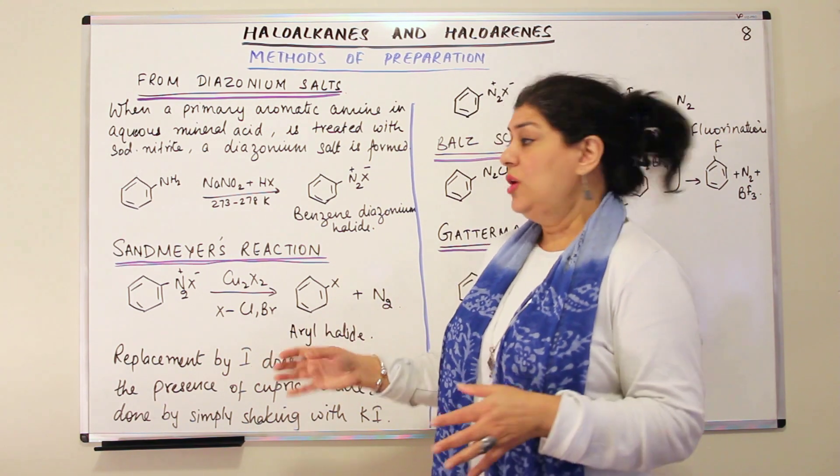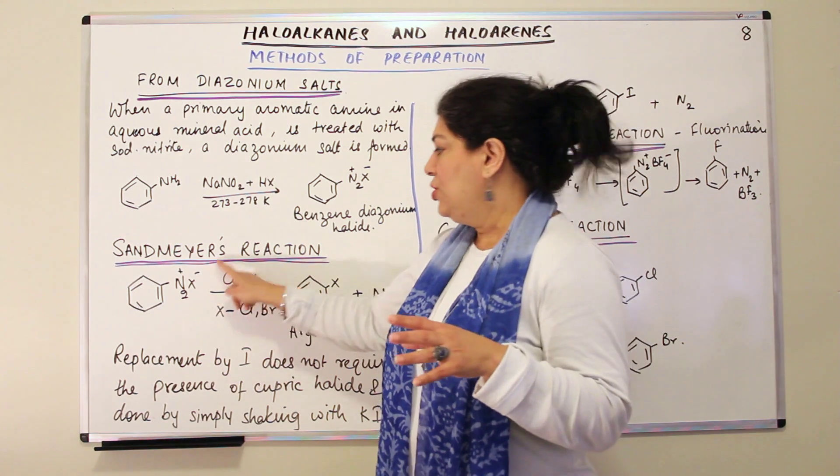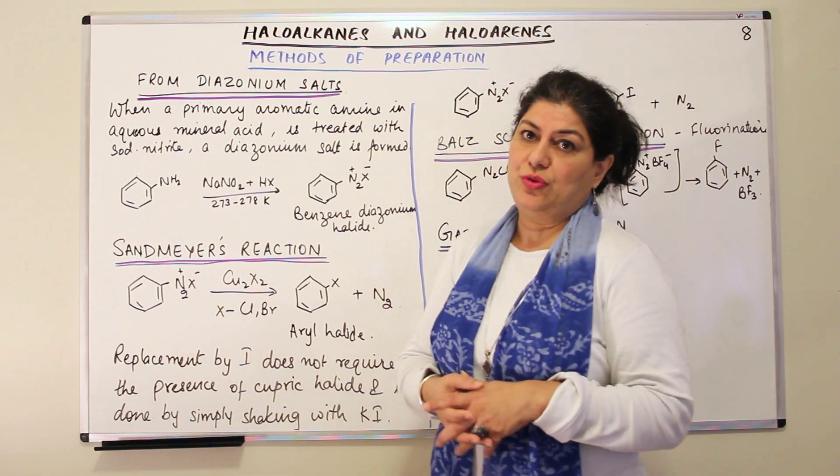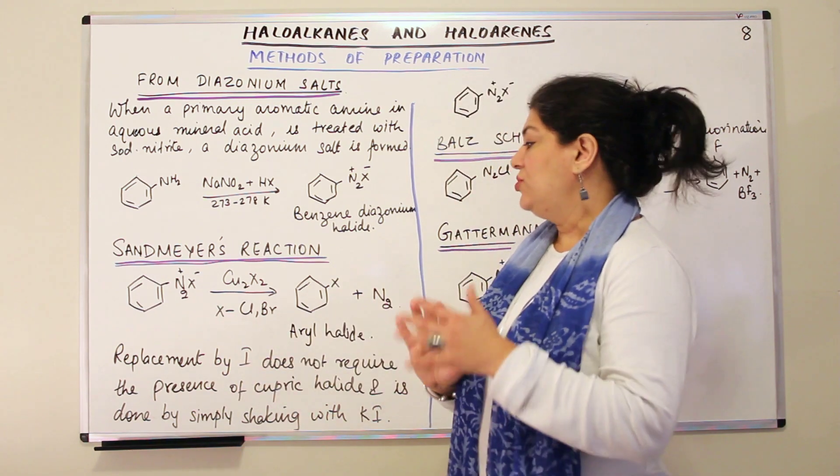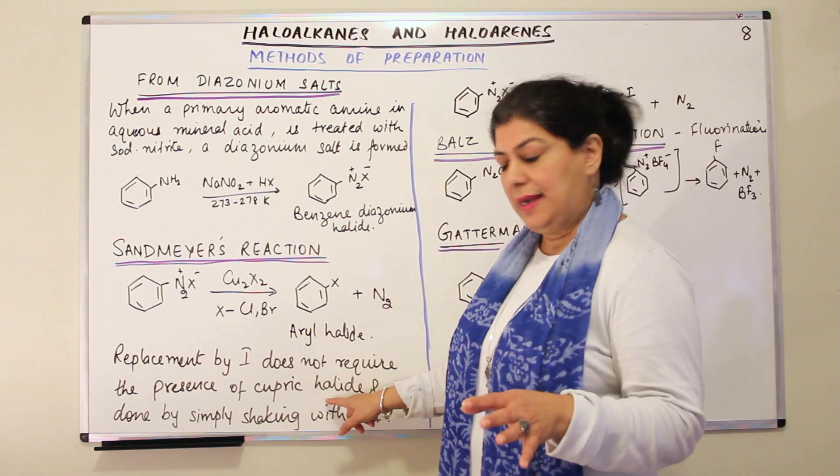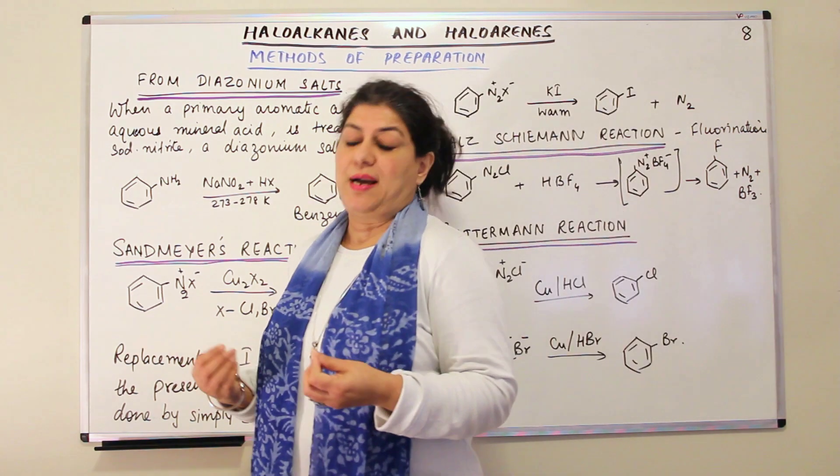The same is seen here also. Sandmeyer's reaction is not really required for iodination. You do not require the presence of Cu2I2. Replacement by iodine does not require the presence of the cupric halide and is done by simply shaking it with potassium iodide.